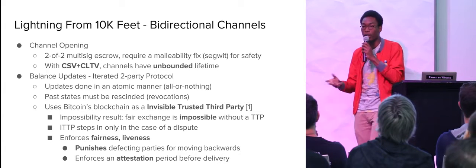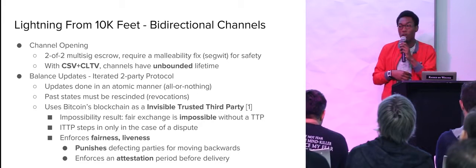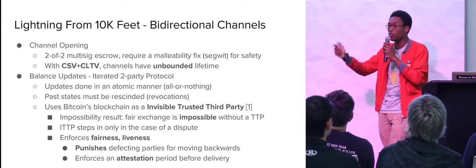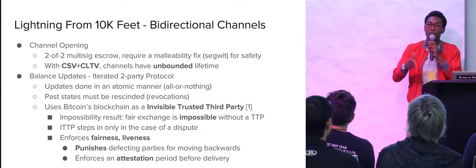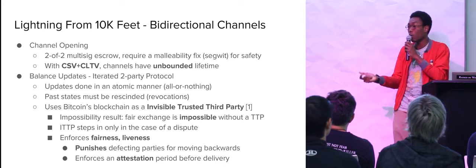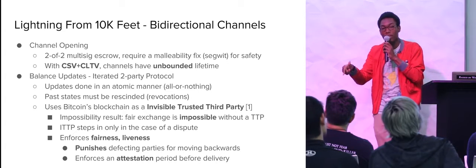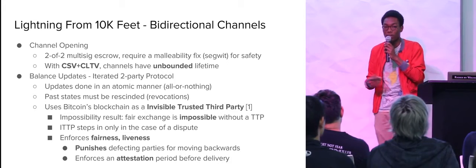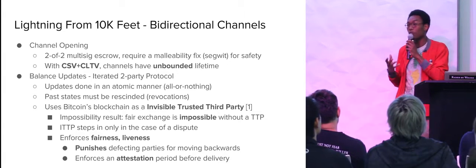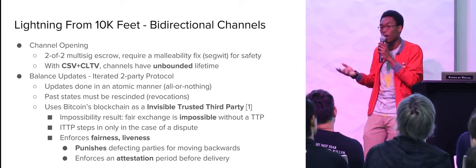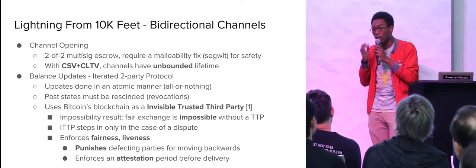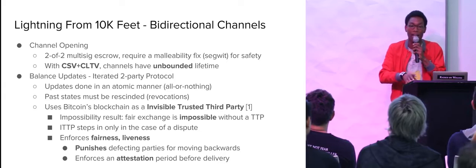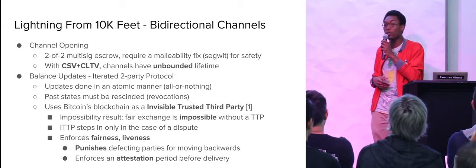Balance updates themselves are basically a two-party iterated protocol where we try to do all the updates in an atomic manner — I push Alice money, she accepts the new state and then revokes the old state. It's important that Alice revokes the prior state, because otherwise she can go back to the state where she has the most money. In order to do that revocation, we basically rip up all the prior states such that if Alice tries to broadcast a prior state, I can punish her. The way I punish Alice is using the Bitcoin blockchain itself as what a paper by Macaulay calls an invisible trusted third party.